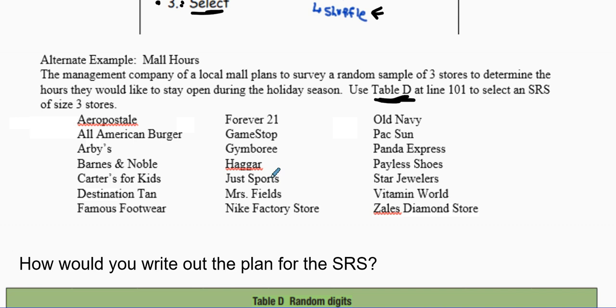Let's just take a quick little example, and this is actually using Table D. The management company of a local mall plans to survey a random sample of three stores to determine the hours they would like to stay open during the holiday season. Use Table D and SRS to find three stores.